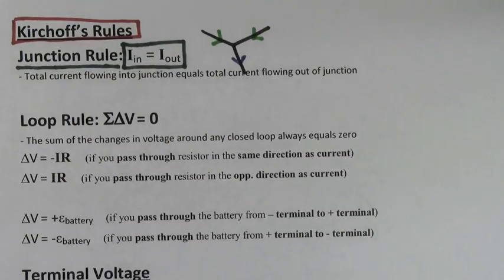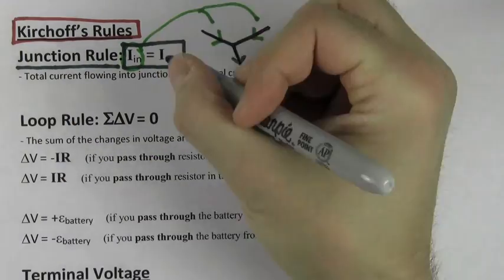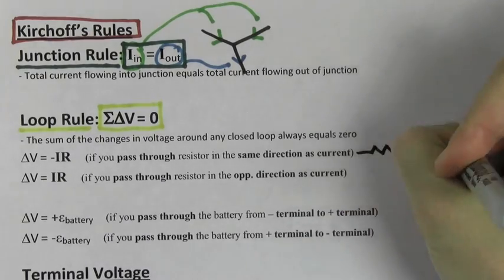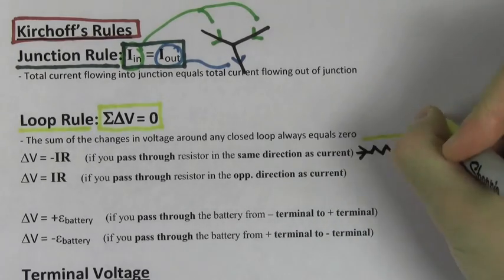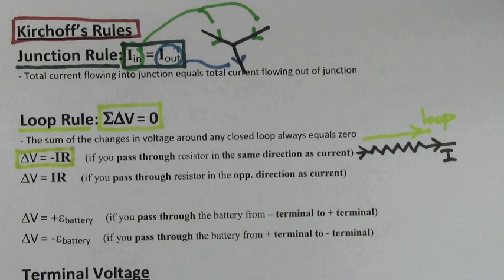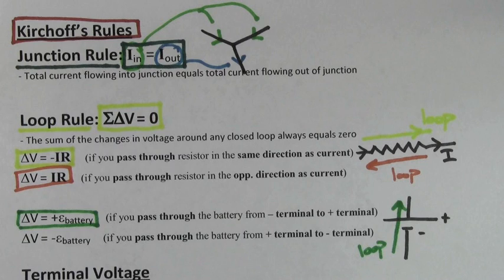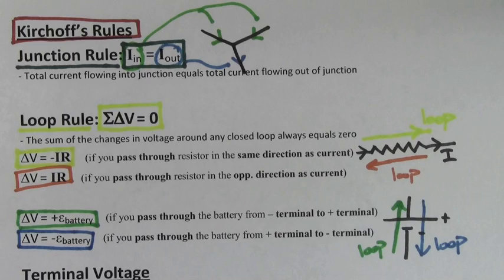Kirchhoff's junction rule says that the total current flowing into a junction has to equal the total current flowing out of a junction. Kirchhoff's loop rule says that if you add up all the voltage drops across a closed loop in a circuit, it has to add up to zero. If your loop goes through a resistor in the same direction the current is flowing, you get a contribution of negative IR. If your loop goes in the opposite direction the current is flowing, you get a contribution of positive IR. If your loop goes through a battery from the negative terminal to the positive terminal, you get a contribution of positive the voltage of the battery — not the voltage of the battery times R or anything like that, just the voltage of the battery. And if your loop goes through a battery from the positive terminal to the negative terminal, you get a contribution of negative the voltage of the battery.